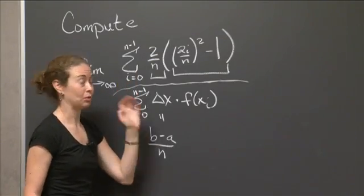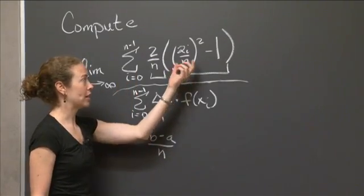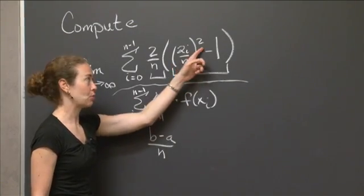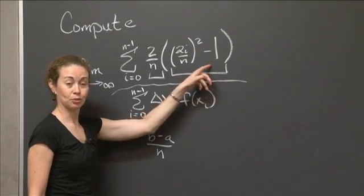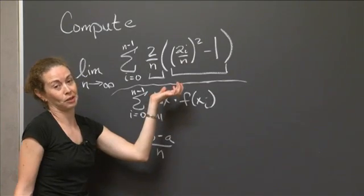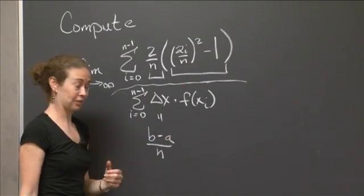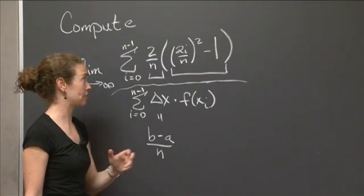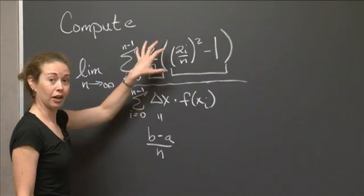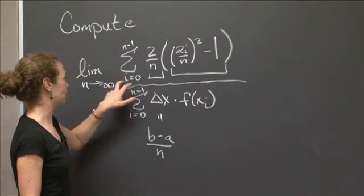Now, first guess would be something like, well, I'm taking some quantity, I'm squaring it, and I'm subtracting 1. So my first guess for this function is x squared minus 1. Let's see if this would actually even make sense, just by looking at the index, the indices I have here.